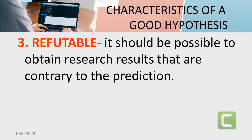And the last characteristic is refutable. A testable hypothesis must be refutable — it must be possible to obtain research results that are contrary to the prediction. For example, if the research hypothesis predicts that the treatment will cause all increasing scores, it must be possible for the data to show a decrease.